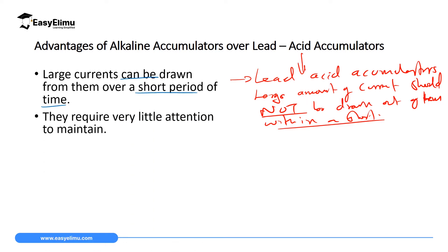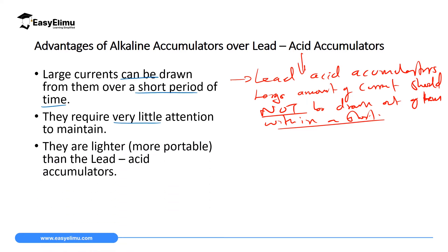The second advantage of alkaline accumulators over lead acid accumulators is that they require little attention to maintain. This is contrary to lead acid accumulators, where we saw seven precautions that must be taken in order for the accumulator to function and last longer. Here you only need little attention for alkaline accumulators to function.